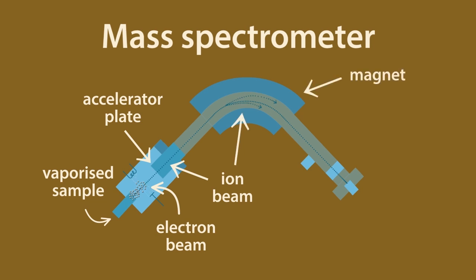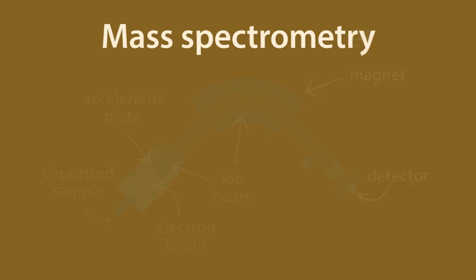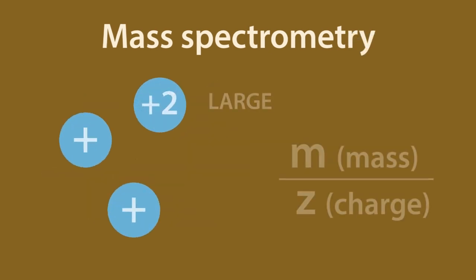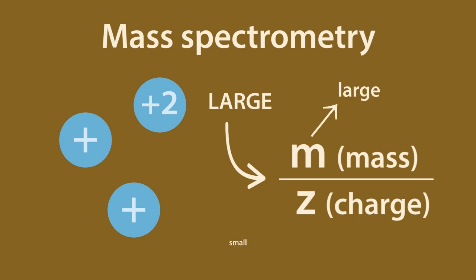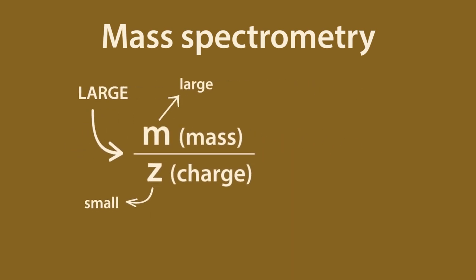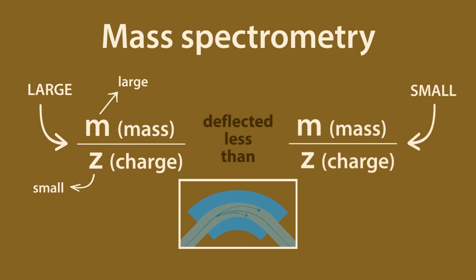The pattern of deflection according to charge and mass can then be depicted on a spectrum. The main idea here is that ions with a large mass to charge ratio, meaning a large mass and a small charge, are deflected less than ions with a smaller mass to charge ratio.